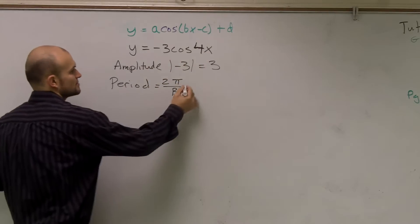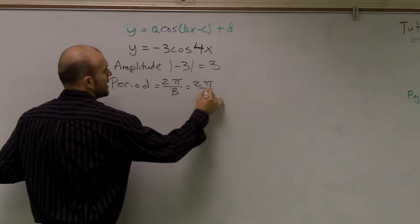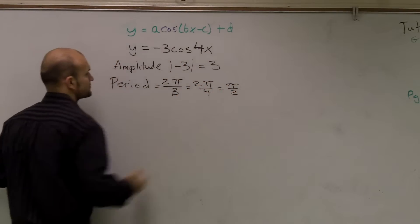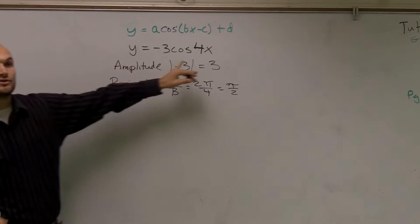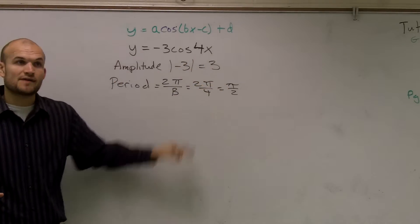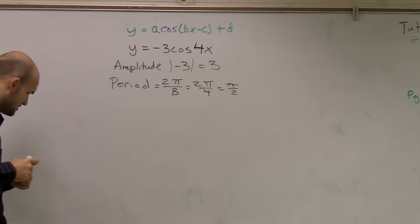In this problem, we have 4. So we have 2π over 4, which equals π over 2. Remember, amplitude is the height from the x-axis that your graph goes up and down from the x-axis. So we have our amplitude, we have our period.